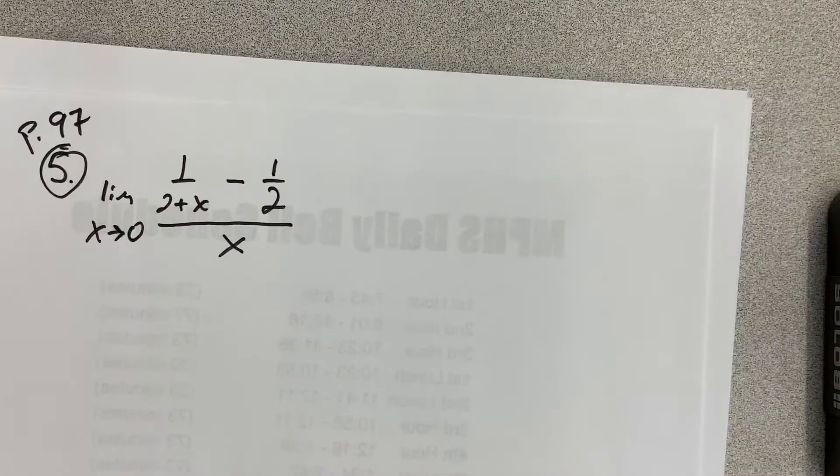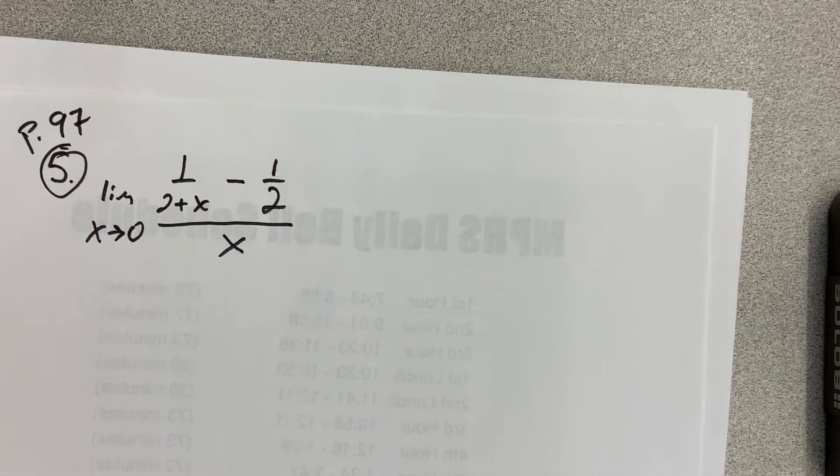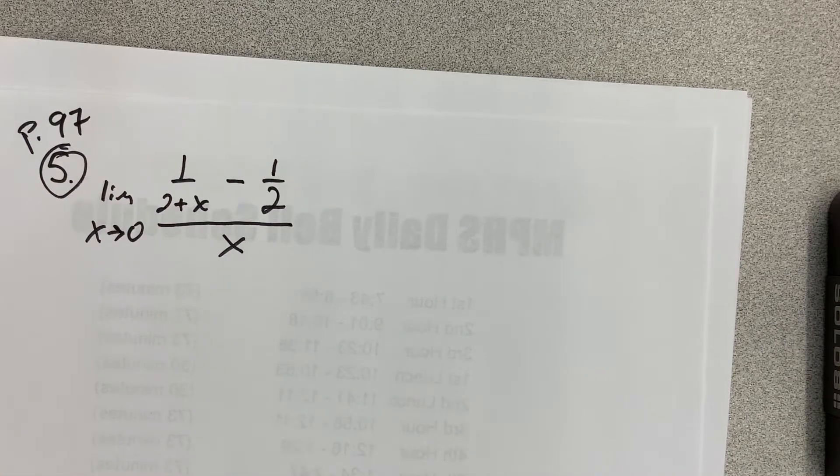So the question is, what do you do? You plug in 0, you try direct substitution, which is what you should always try first. It doesn't work because you divide by 0. Well, how can you fix this?